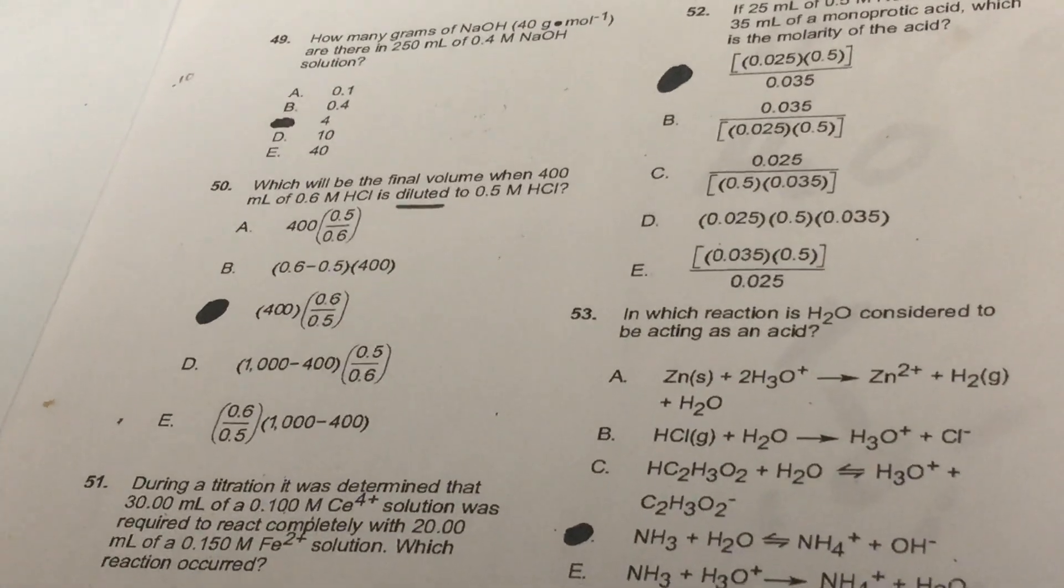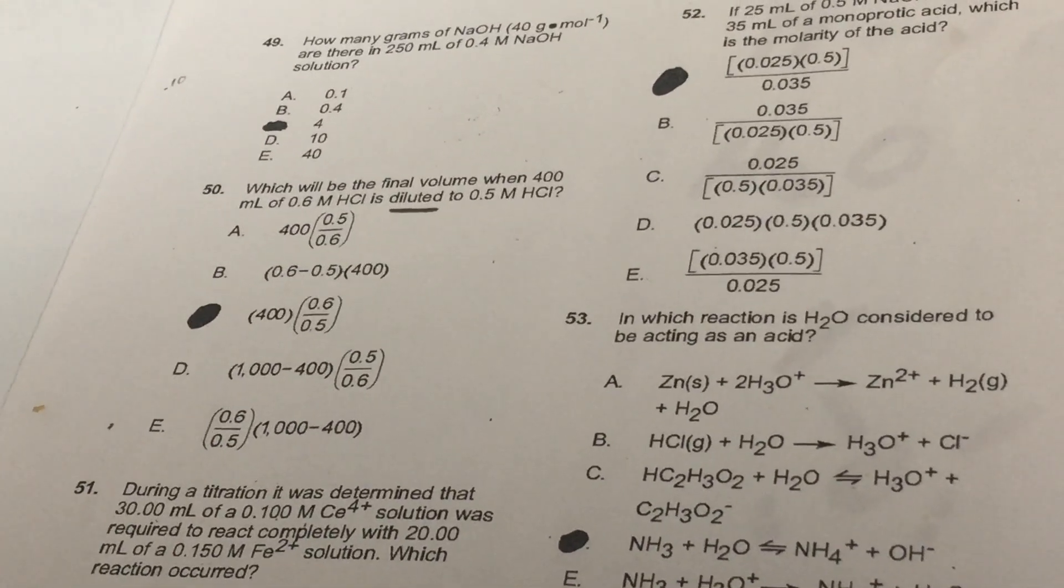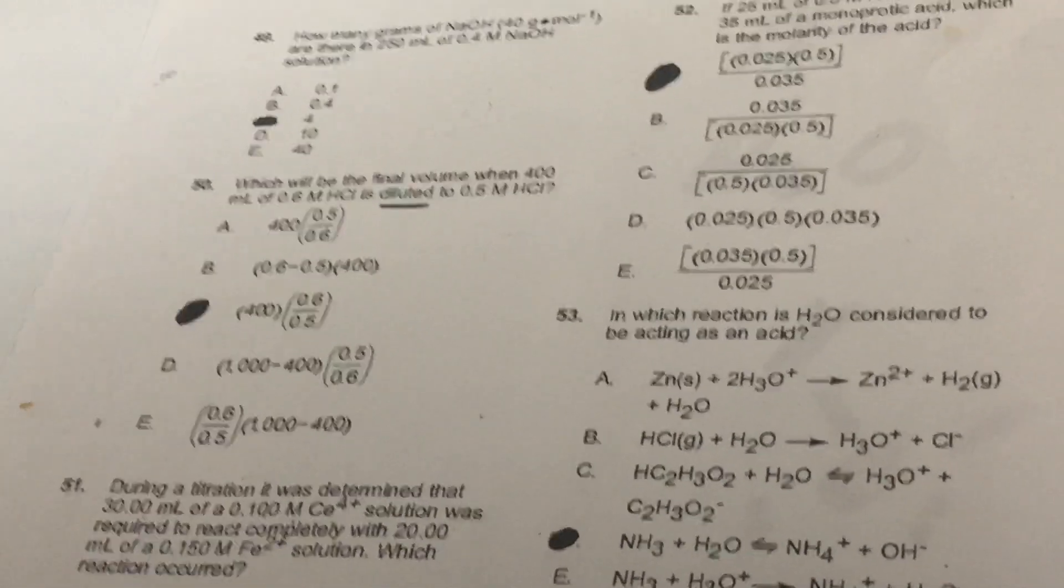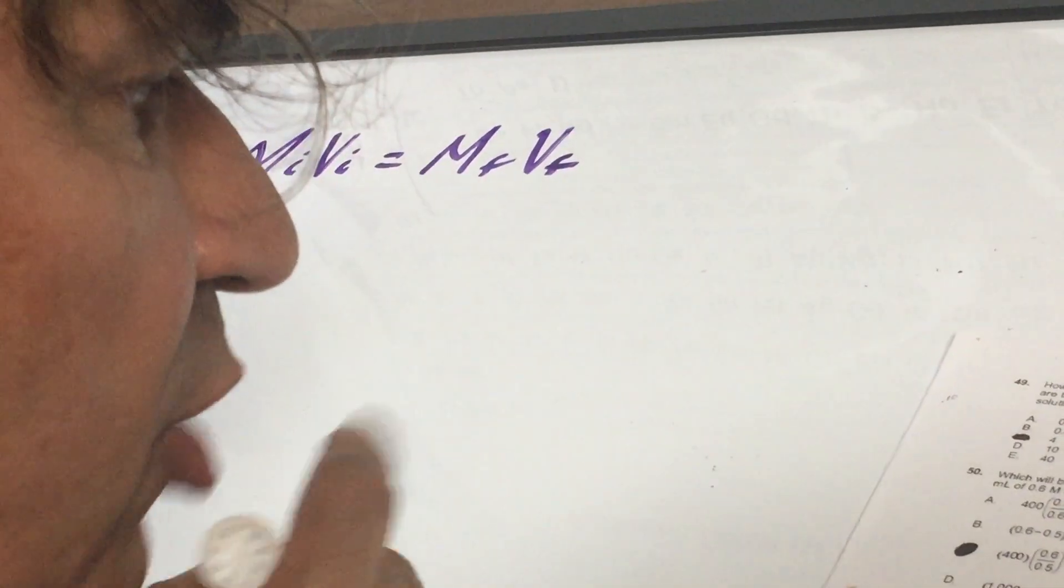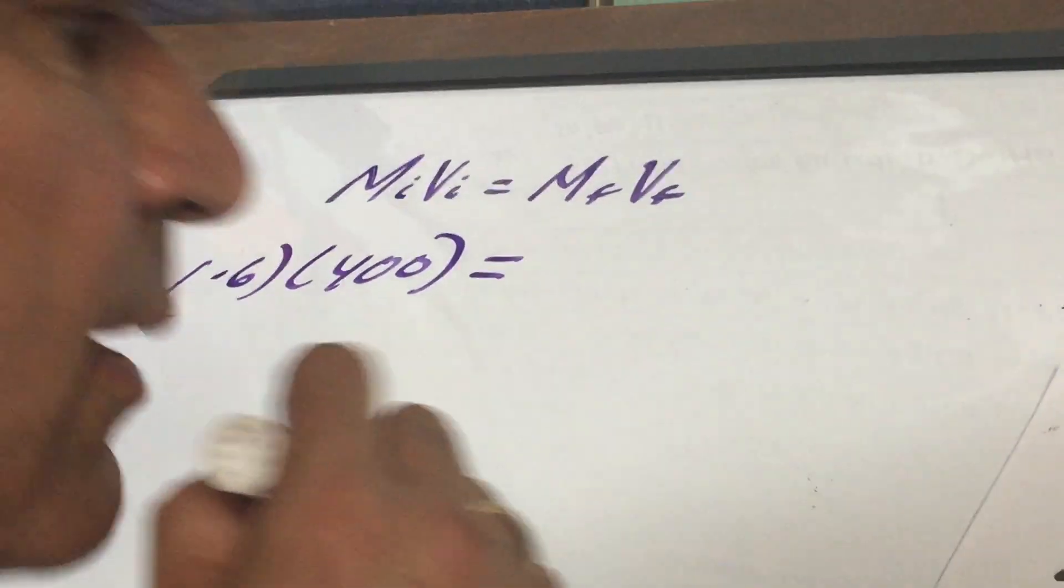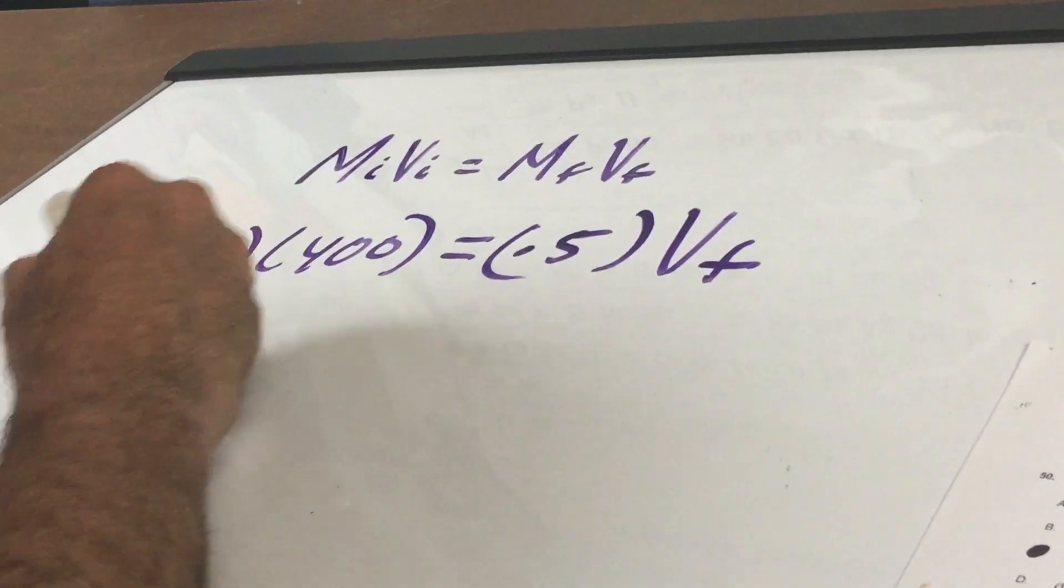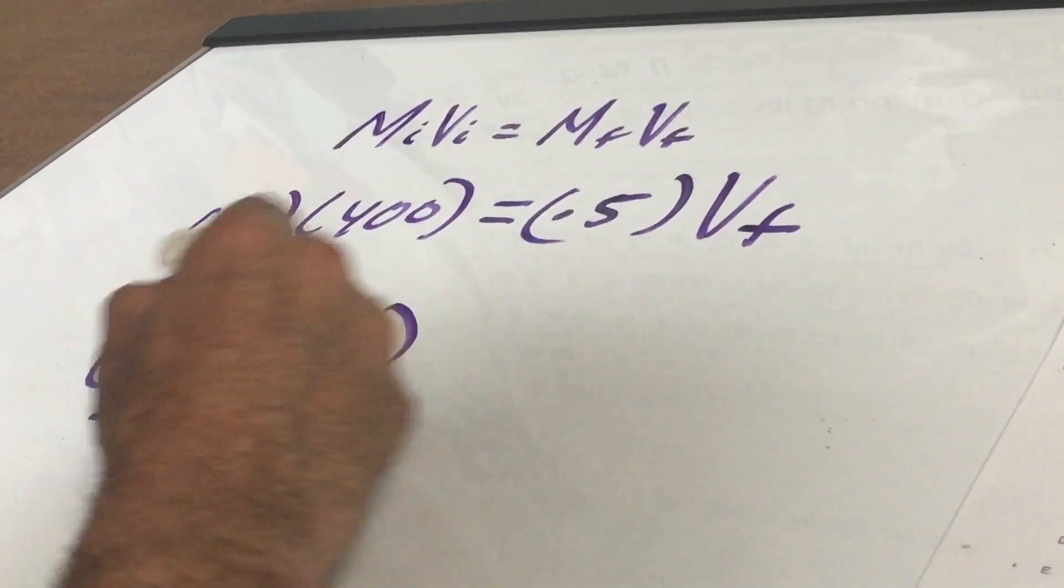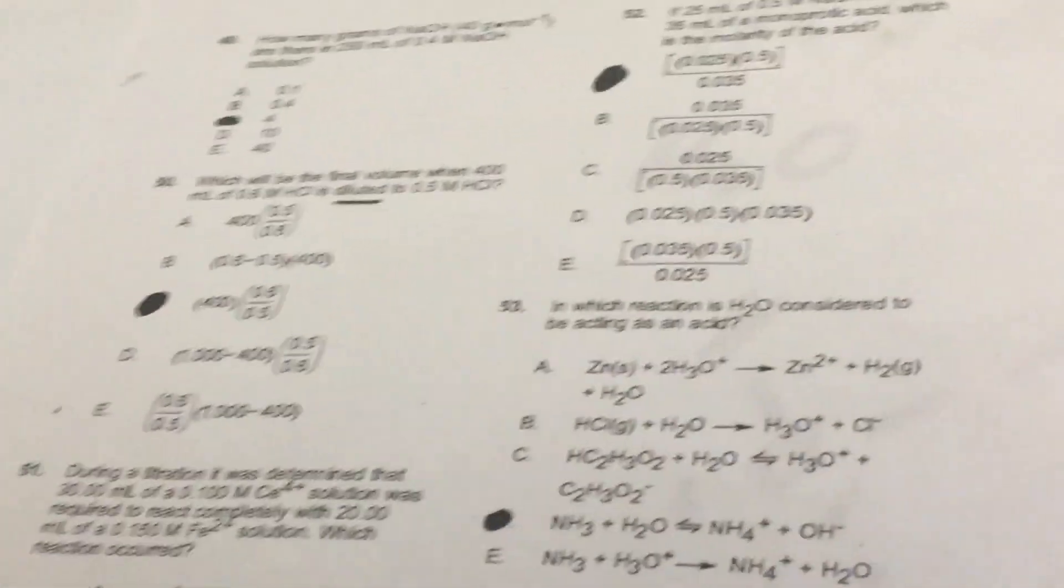Question number 50. This is a dilution problem. It says which will be the final volume when 400 mL of 0.6 molar HCl is diluted to 0.5 molar HCl. What I do for dilutions, I write the formula Mi Vi = Mf Vf, molarity initial times volume initial equals molarity final times volume final. The initial molarity is 0.6, and I'm going to stay in milliliters. That's 400 mLs, and we're diluting it to 0.5, and we want V final. So it's 0.6 times 400 over 0.5 is V final, and that would be choice letter C.